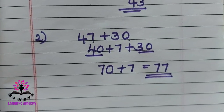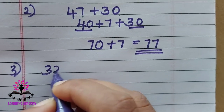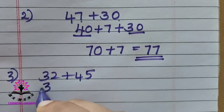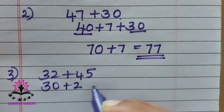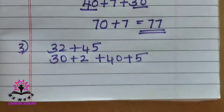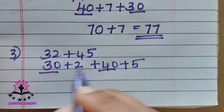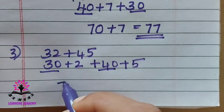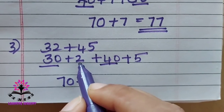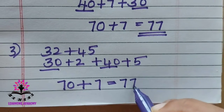One more: 32 plus 45. Split and write: 30 plus 2 is 32, and 40 plus 5 is 45. Add the tens: 3 plus 4 is 7, giving 70. Add the units: 2 plus 5 is 7. So 70 plus 7 is 77.